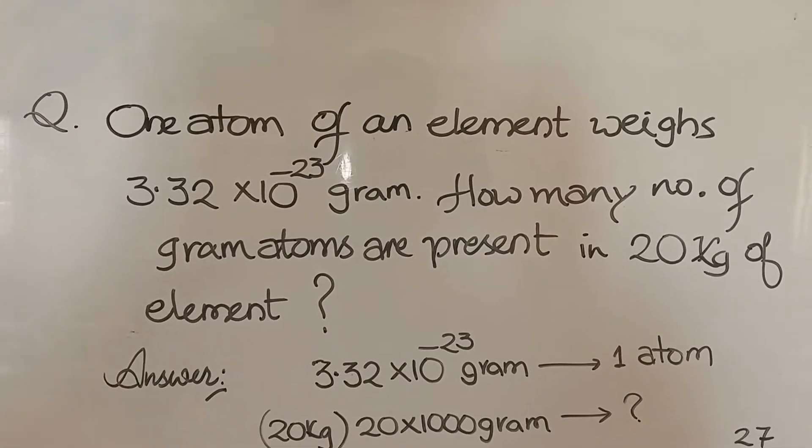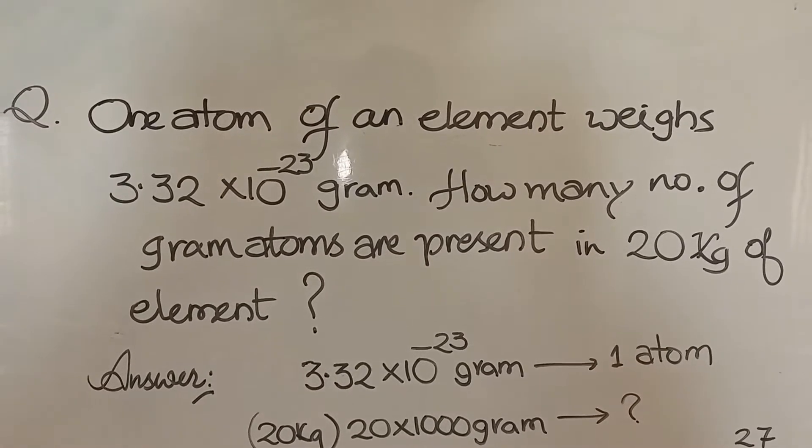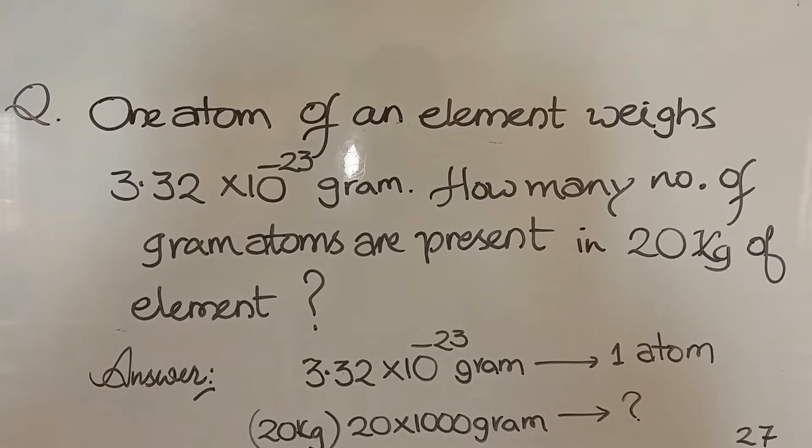Serious question. One atom of an element weighs 3.32×10^-23 grams. How many number of gram atoms are present in 20 kg of element?